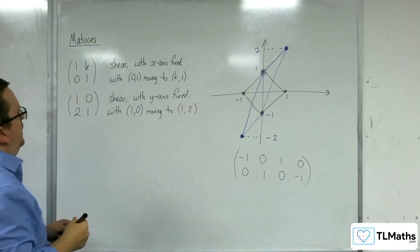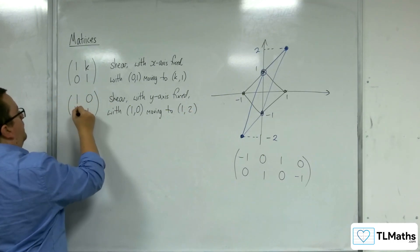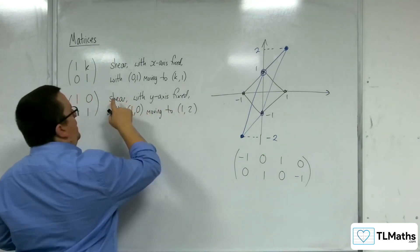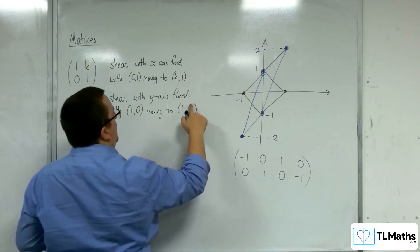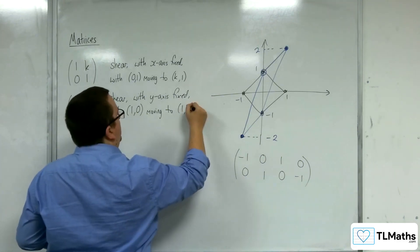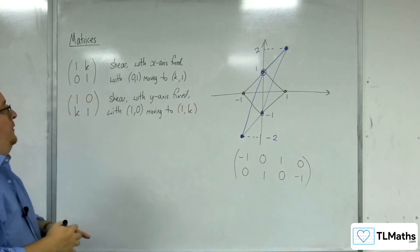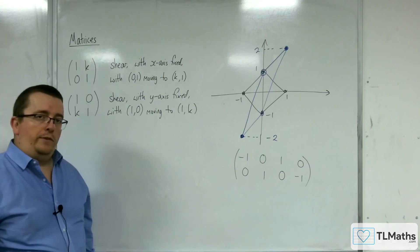So if we were to generalize this to k, then we'd have a shear with the y-axis fixed with 1, 0 moving to 1, k. And so that is our introduction to shears.